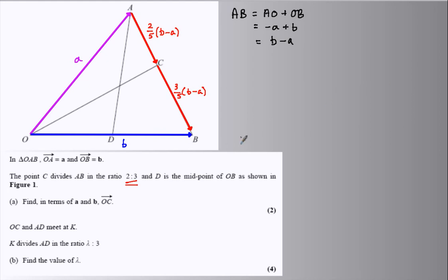This should allow us now to give the vector OC. Let's go OC. Let's go O to A, and then let's go A to C. OA, and then 2 fifths of B minus A.